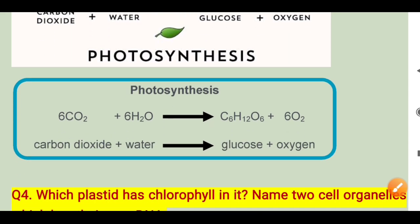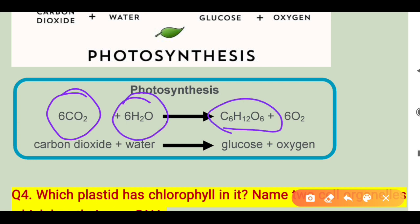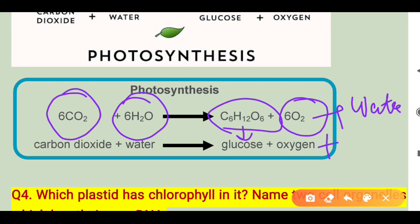The chemical reaction for photosynthesis: 6 molecules of CO2 combined with 6 molecules of water produce C6H12O6, which is glucose, along with 6 CO2 and water as additional outputs. This is the photosynthesis chemical equation.